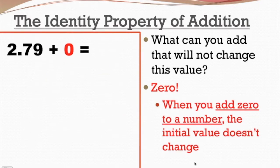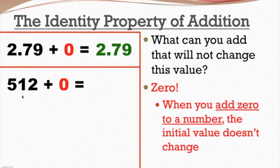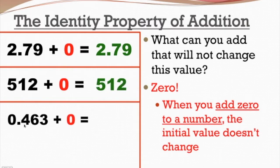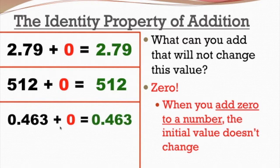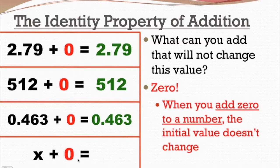That applies to any number. So let's say we have 2.79 plus zero — that's going to be 2.79. How about 512 plus zero? We're adding zero to it, so that doesn't change: we get 512. How about .463 plus zero? Again, we're adding zero, so the initial value doesn't change — that's going to be .463. And how about x plus zero? I switched it up by throwing a variable in there. That letter is called a variable; it can have any value, but it doesn't matter. Anytime we add zero to any value, we just get what we started off with — so x plus zero is just x.